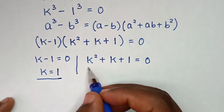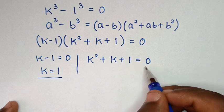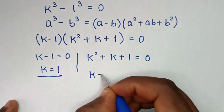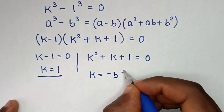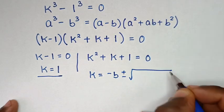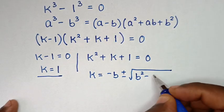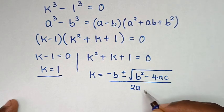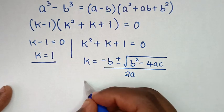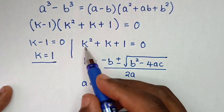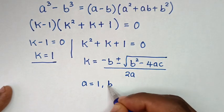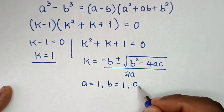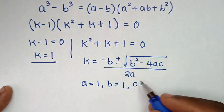To solve from this quadratic equation, we'll use the quadratic formula to find the values of k. The quadratic formula is k is equal to negative b plus or minus square root of b square minus 4ac over 2a, whereas a is equal to the coefficient of k square, which is 1, and b is equal to 1, and c is equal to the constant, which is 1.